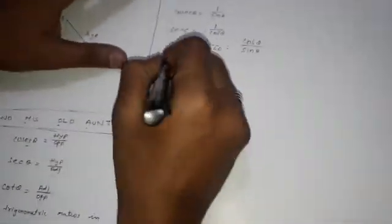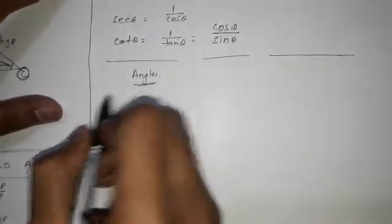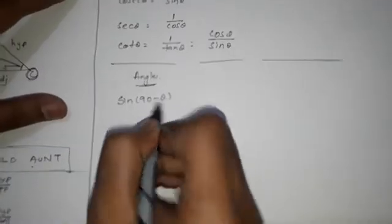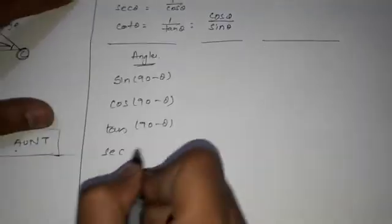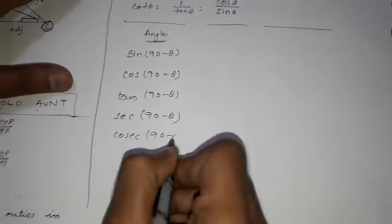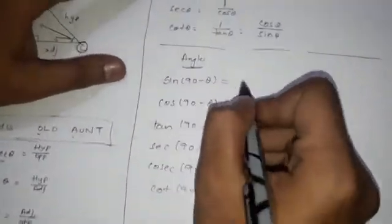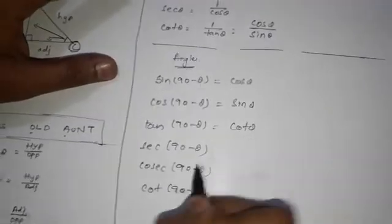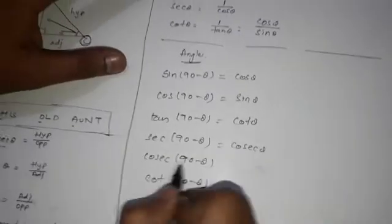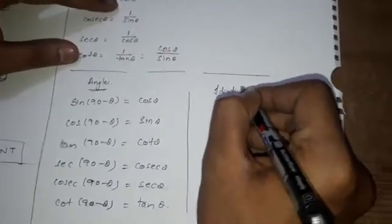After that we have angles involving 90 minus theta: sine(90 − θ) = cos θ, cos(90 − θ) = sin θ, tan(90 − θ) = cot θ, secant(90 − θ) = cosecant θ, cosecant(90 − θ) = secant θ, and cot(90 − θ) = tan θ.